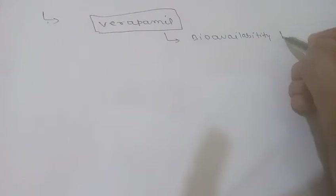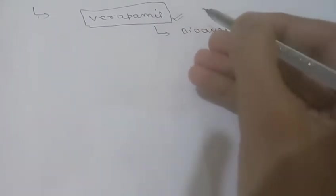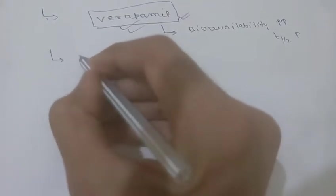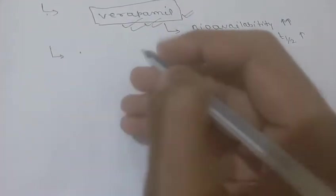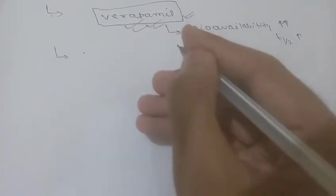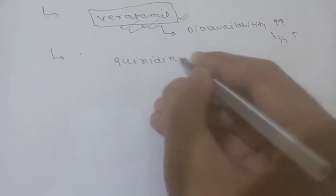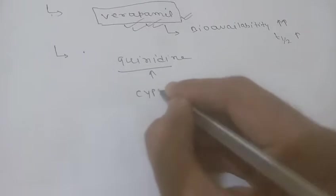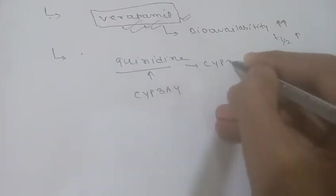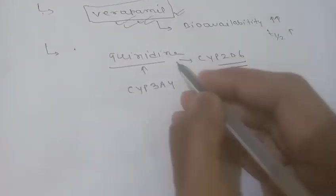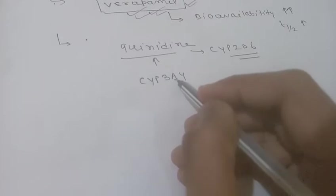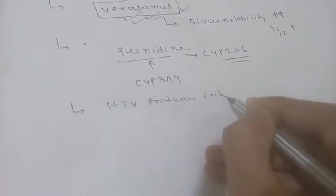On chronic dosing, the oral bioavailability of verapamil is increased — nearly doubled — and its half-life is also prolonged, because it inhibits its own metabolism. This is an example where a drug inhibiting its own metabolism increases its oral bioavailability. Another example: quinidine is metabolized mainly by CYP3A4 but inhibits CYP2D6, illustrating a drug that inhibits one isoenzyme while being a substrate of another.